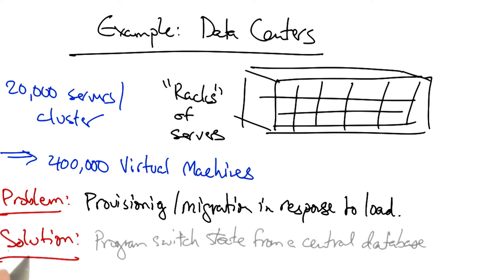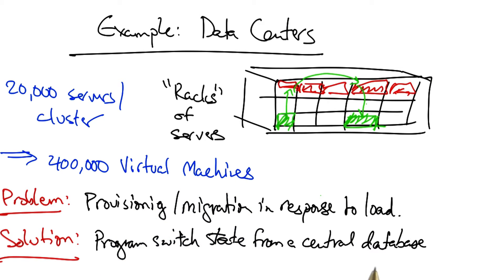SDN solves this problem by programming the switch state from a central database. Supposing I have two virtual machines within the data center that need to communicate with one another, the forwarding state in the switches ensures that traffic is forwarded correctly.